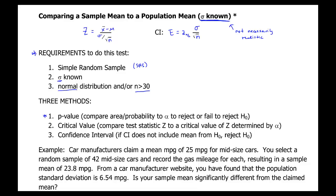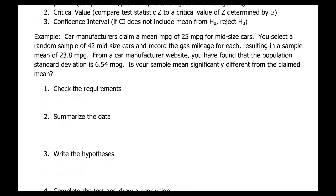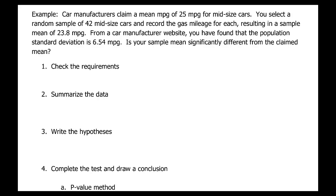So our example, we have a car manufacturer's claim a mean of 25 miles per gallon. So the claim is going to be the population mean. You select a random sample of 42 mid-sized cars, which would be N, and record the gas mileage for each. The sample mean, which is X bar, is 23.8. The population standard deviation is 6.54, that's sigma. And keyword in the question is, is your sample mean significantly different from the claimed mean?